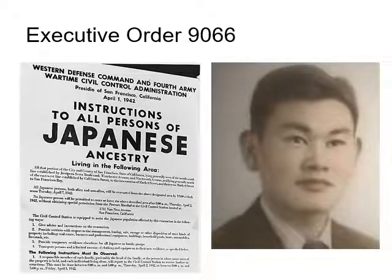One of the most unfortunate executive orders was Executive Order 9066. It was signed and issued during World War II by Franklin D. Roosevelt on February 19, 1942. It authorized the Secretary of War to prescribe certain areas as military zones, clearing the way for the incarceration of nearly 120,000 Japanese Americans during the war. Two-thirds of them were U.S. citizens, born and raised in the United States. This order was upheld by the Supreme Court in Korematsu v. United States, which was decided in 1944.